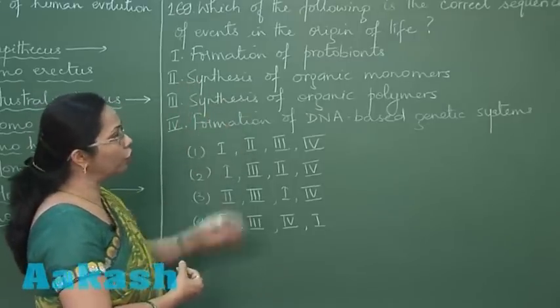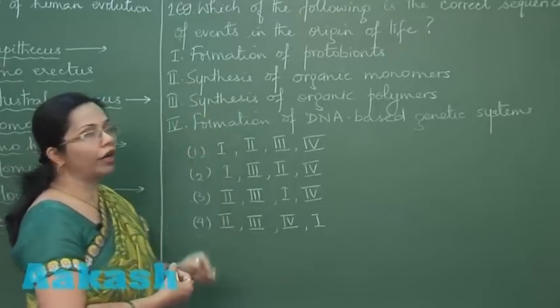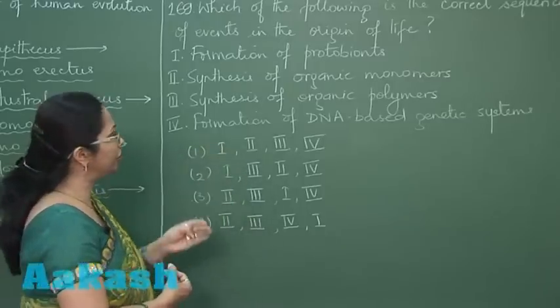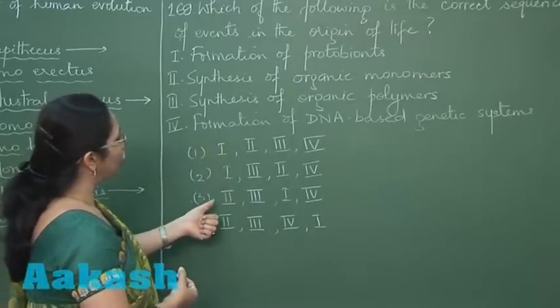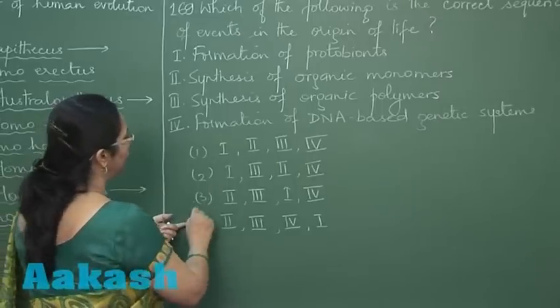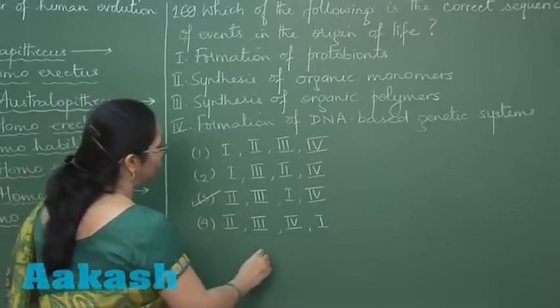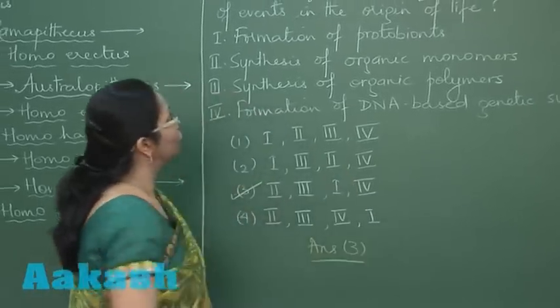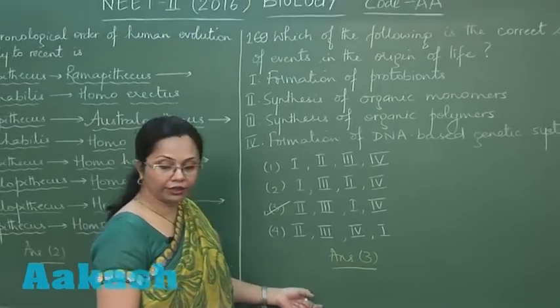Once the protobionts were formed, they acquired the ability to replicate by the origin of the genetic material. So our choice here is 2, 3, 1, and 4—that is given in option number 3. So our answer is 3. Let's move on to the next question, 170.